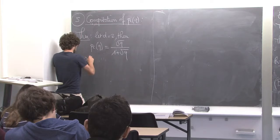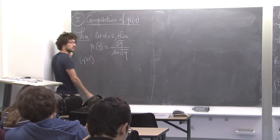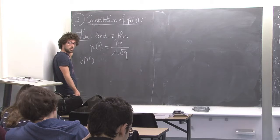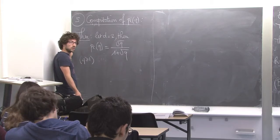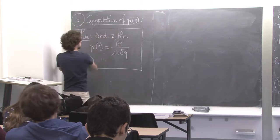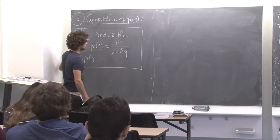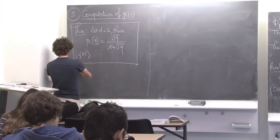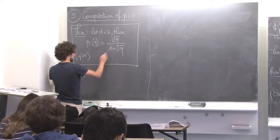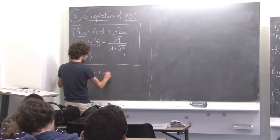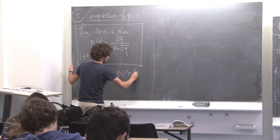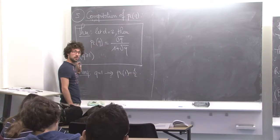We are always assuming q ≥ 1, because I cannot prove the existence of p_c for q < 1. The remark you can notice is that for q = 1, you recover p_c(1) = 1/2. So all of this is coherent.